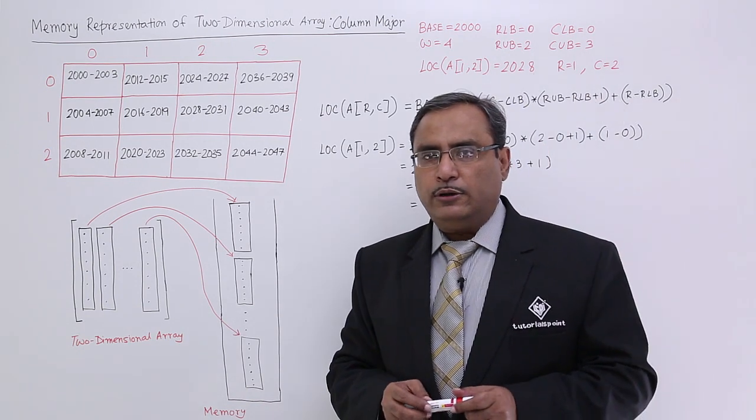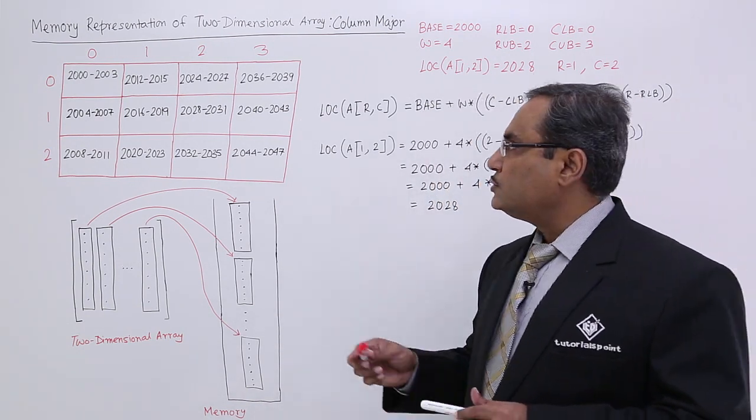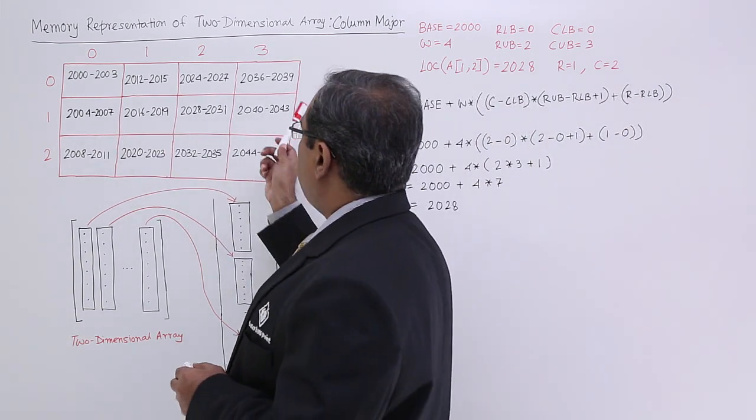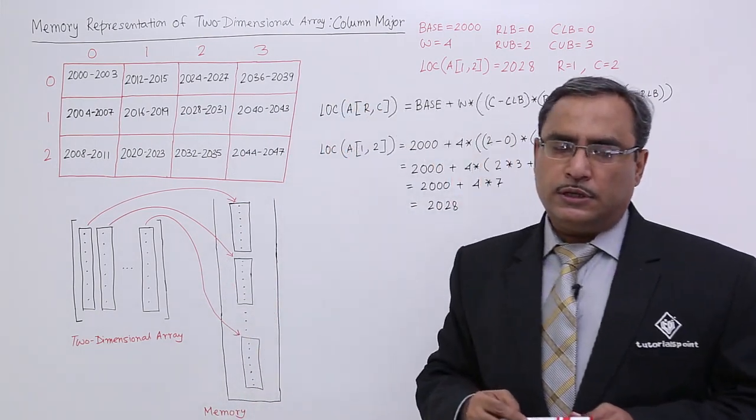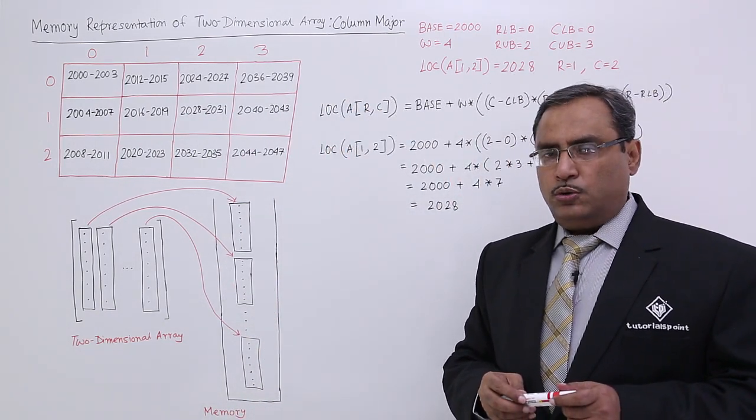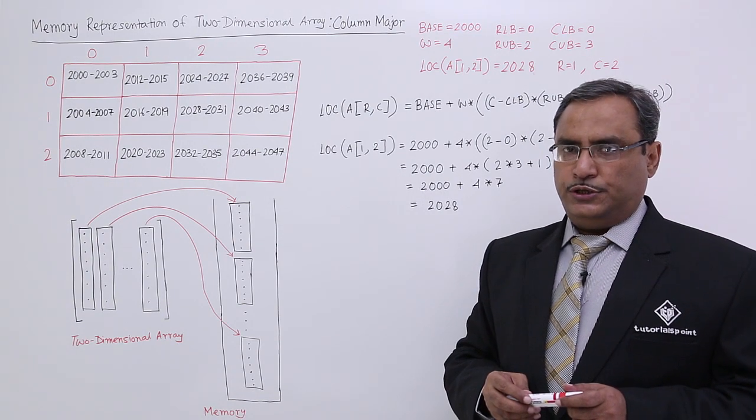Let us go for one example that will clear up our conception and doubts. Let us suppose this is the matrix having got four columns 0 to 3 and three rows, rows number are ranging from 0 to 2.